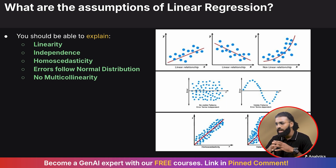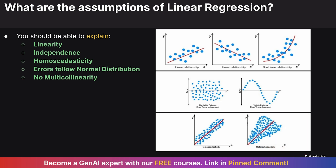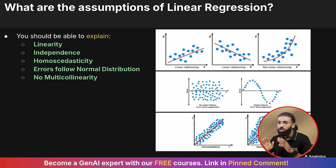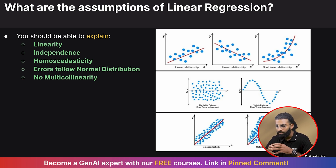Linearity means there is a linear relationship between independent and dependent variables. In independence, residuals or errors are independent of each other. In homoscedasticity, the variance of residuals is constant across all levels of the independent variable. In normality of errors, residuals are normally distributed. And in no multicollinearity, independent variables are not highly correlated with each other.